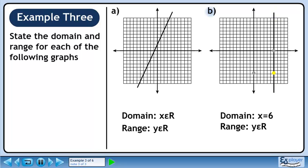In Part B, we have a vertical line passing through x equals 6. Since the only x value the graph ever sees is 6, we can write x equals 6 for our domain.